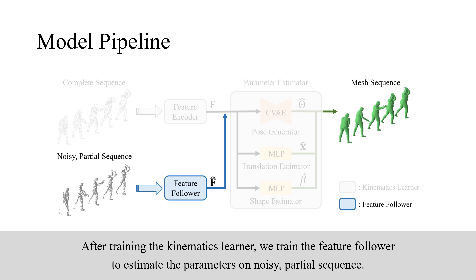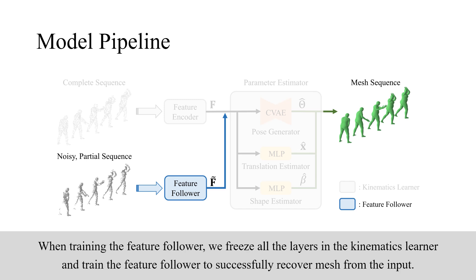After training the Kinematics Learner, we train the feature follower to estimate the parameters on noisy partial sequence. When training the feature follower, we freeze all the layers in the Kinematics Learner and train the feature follower to successfully recover mesh from the input.